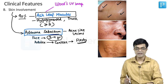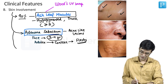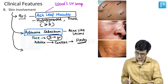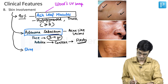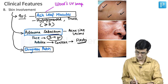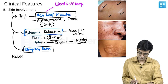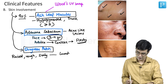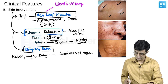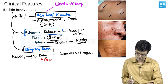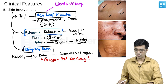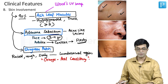Adenoma sebaceum are usually absent at birth. The third type of skin lesion is the shagreen patch — a raised, rough, scaly lesion present in the lumbosacral region. According to Nelson, it has an orange peel consistency. These are the three classical dermatological manifestations found in tuberous sclerosis.